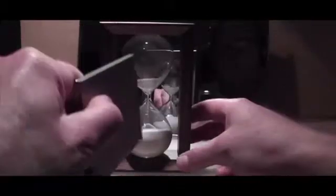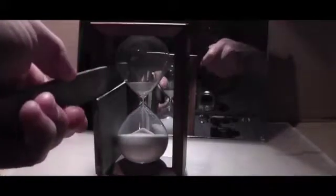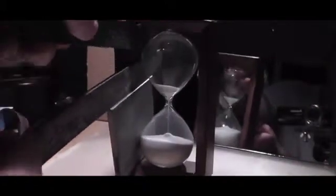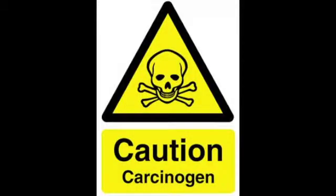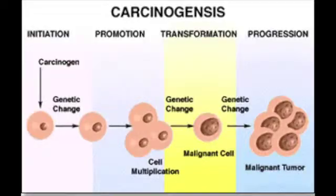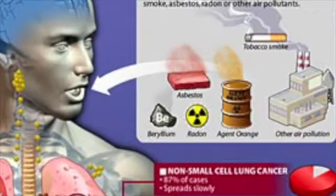Beryllium sensitization and berylliosis can occur within 50 days of first exposure in modern industry. Some cases of berylliosis don't develop until 30 to 40 years after exposure has ceased. On average, berylliosis takes at least 6 to 15 years after exposure to develop into clinically significant respiratory disease. The International Agency for Research on Cancer has classified beryllium and beryllium compounds as carcinogenic to humans, and the U.S. Environmental Protection Agency has classified inhaled beryllium as a probable human carcinogen.